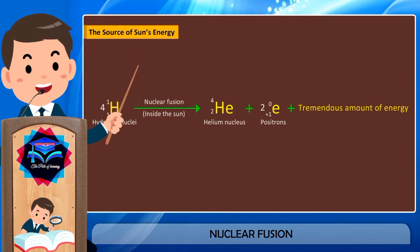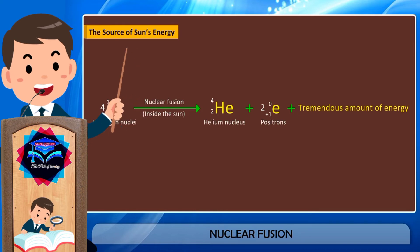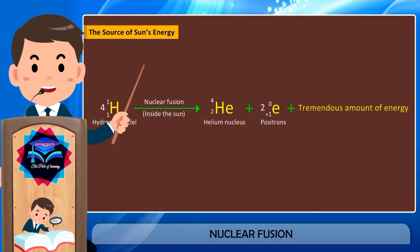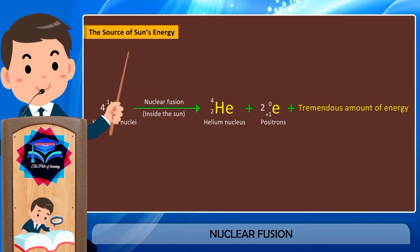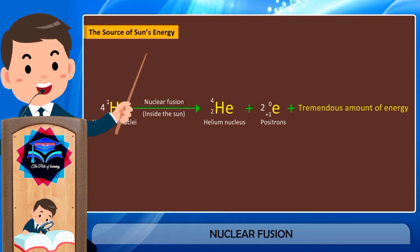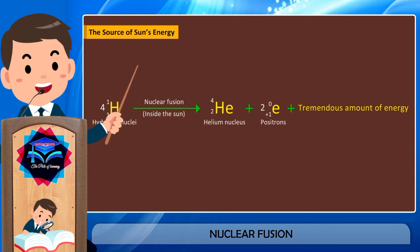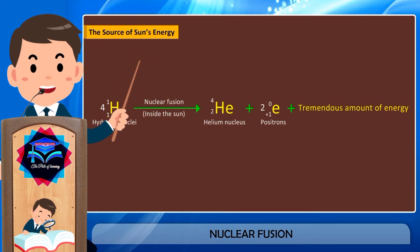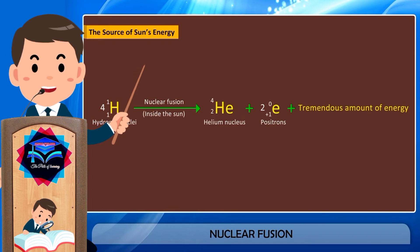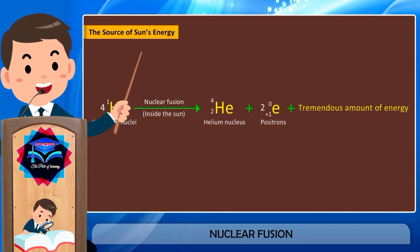The sun, which gives us heat and light, derives its energy from the fusion of hydrogen nuclei into helium nuclei, which is going on inside it all the time. The main nuclear fusion reaction taking place in the sun, which releases a tremendous amount of energy, is the fusion of four hydrogen atom nuclei to form a bigger nucleus of a helium atom.